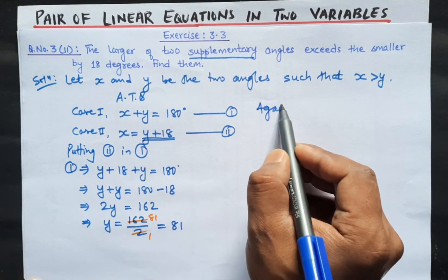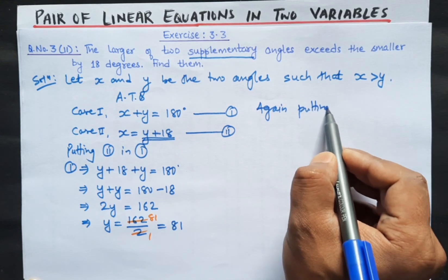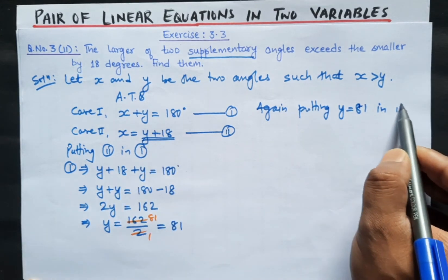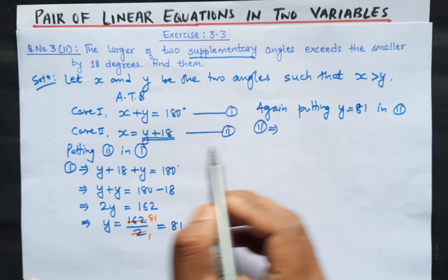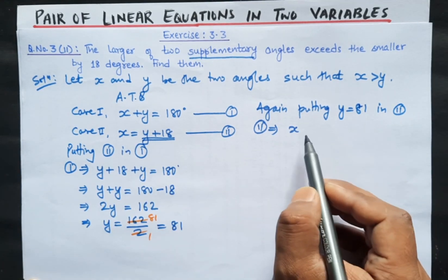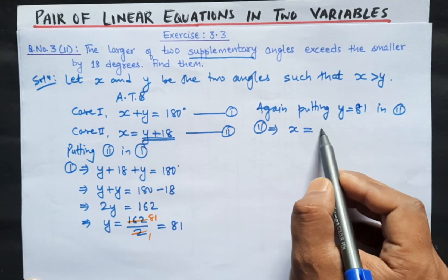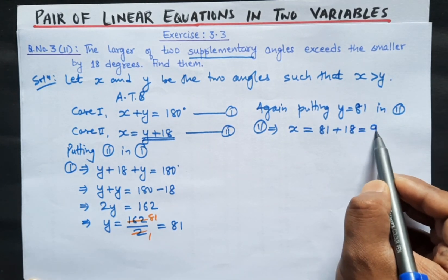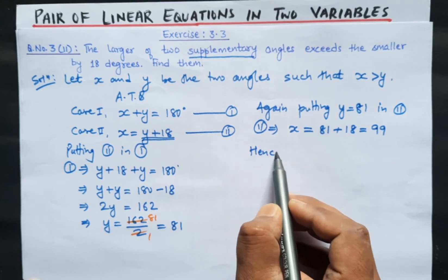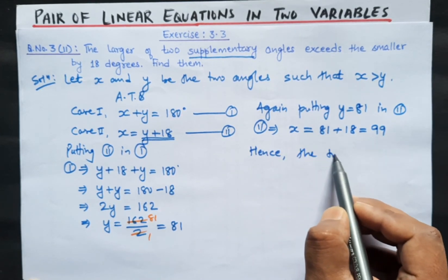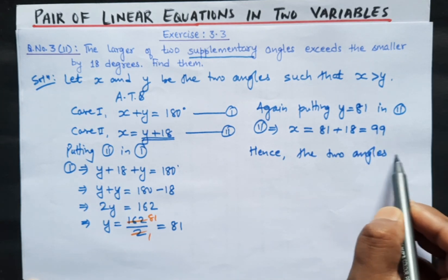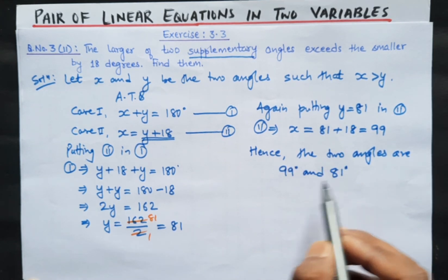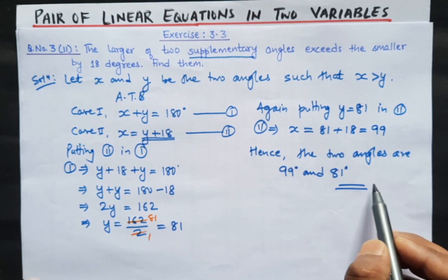Dividing, y equals 81. Again putting y equal to 81 into equation number 2: x equals y plus 18, so x equals 81 plus 18, which equals 99. Hence, the two angles are x equals 99 degrees and y equals 81 degrees. The sum of these two is 180 degrees because these are supplementary angles.